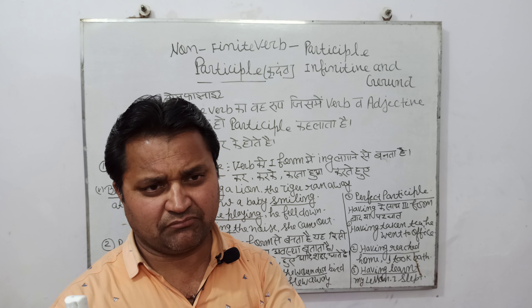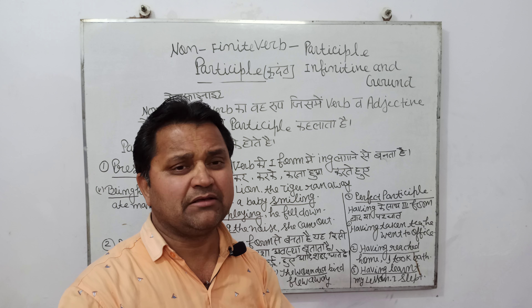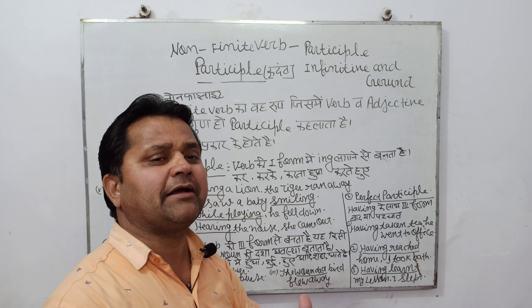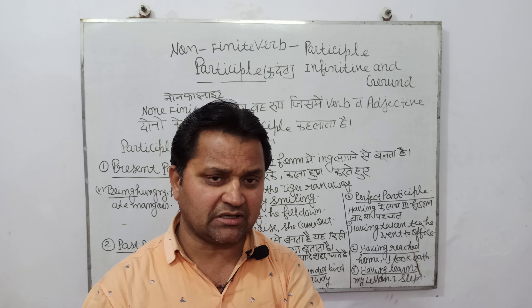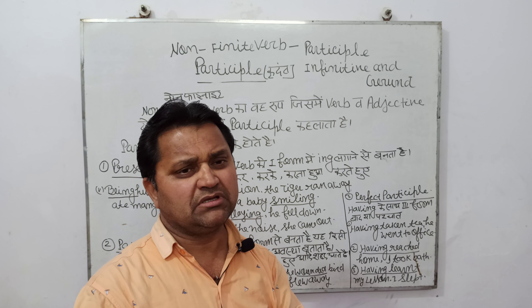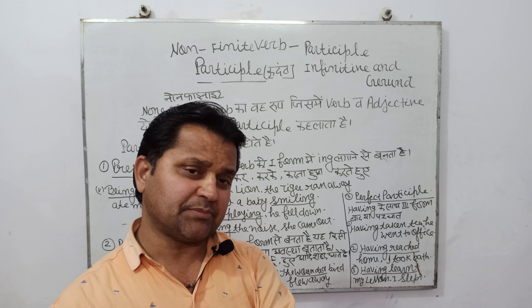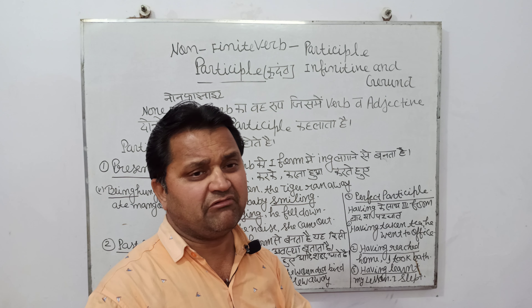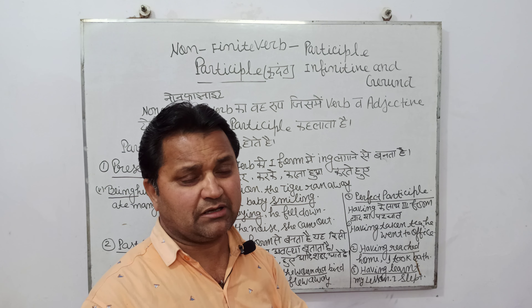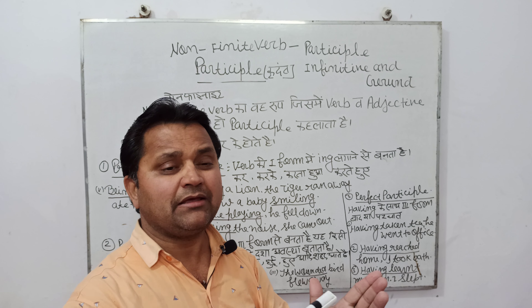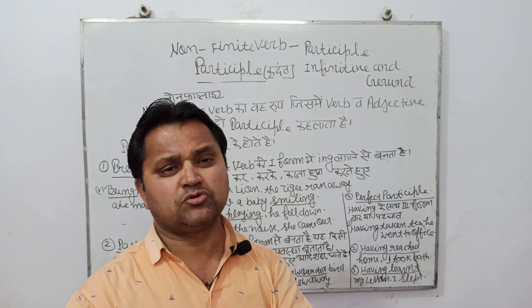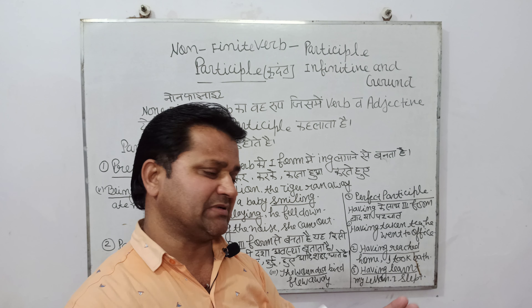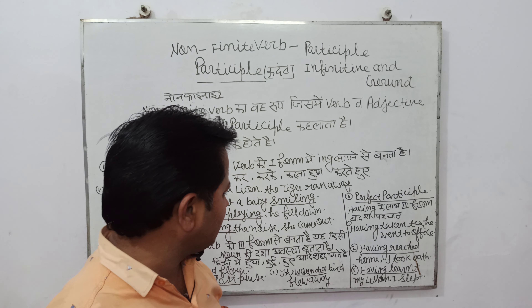Ab dekh lete hain — perfect participle. 'Having' ke saath third form ka prayog karne se perfect participle banta hai. Aur perfect participle mein darshaya jaata hai ki ek karya ki samapt hone ke thode der baad hi doosra karya shuru ho jaata hai. Aur iske Hindi vaakyon mein 'baad' ya 'pashchat' aate hain. Jaise — having taken tea, he went to office. Chai lene ke baad, woh office gaya. Yaani pehle chai li, uske baad office gaya.